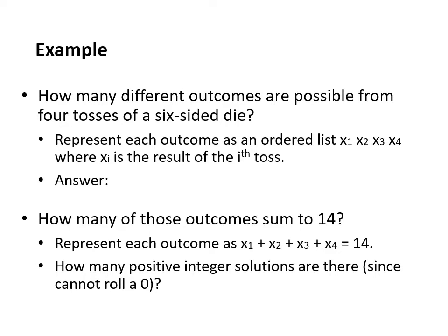Let's leverage this to solve an example involving tossing a six-sided die. First, let's compute how many different outcomes are possible from four tosses of such a die. Why don't you pause the video now and try to solve this on your own? The idea is to represent each outcome as an ordered list (x₁, x₂, x₃, x₄) where xᵢ is the result of the i-th toss. Repetitions are allowed — we can get four sixes — so the answer is 6⁴ outcomes.